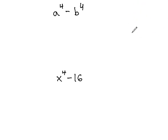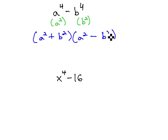In other words, a difference of 4th powers is just a difference of squares. The square root of a to the 4th is a squared. The square root of b to the 4th is b squared. Since we have a difference of squares, this can factor to the sum and difference of the square roots: a squared plus b squared and a squared minus b squared.